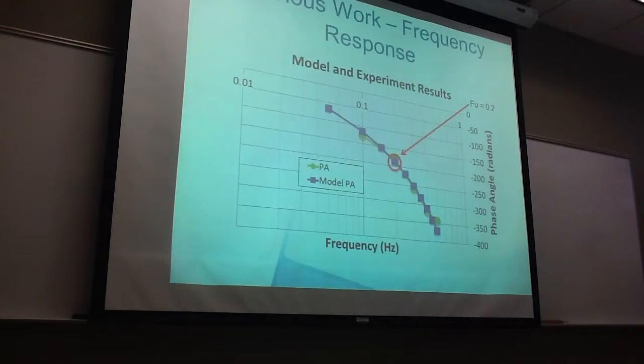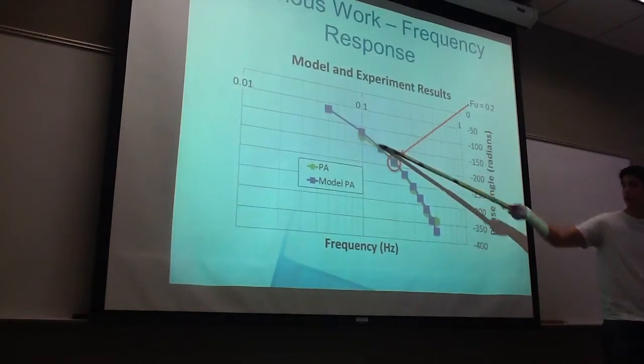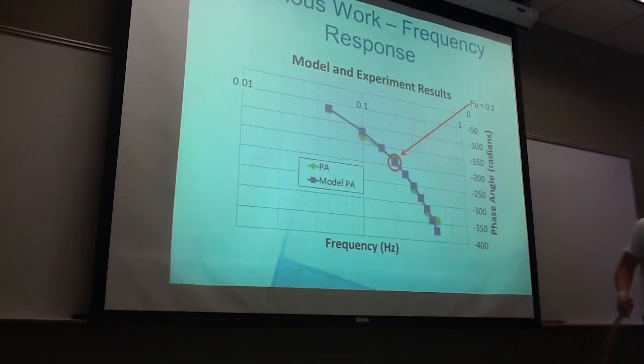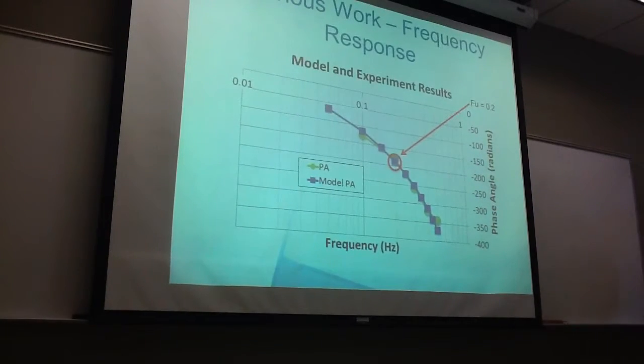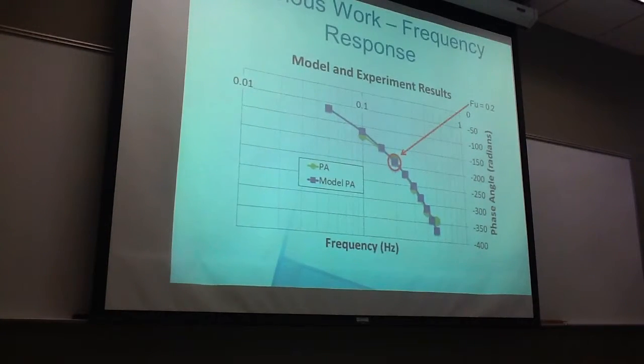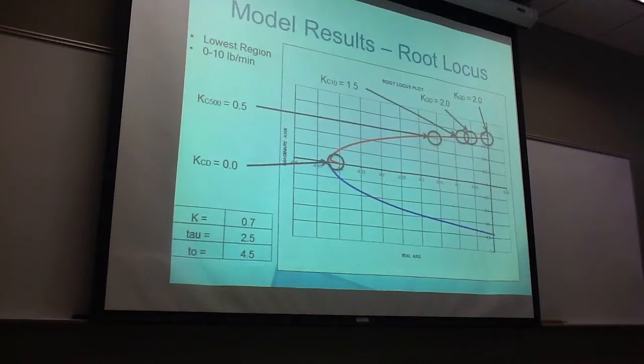And on to our frequency response. This is also another model versus experimental results graph right here. The model results are in the purple, and the experimental is in the green. And our ultimate frequency, we found to be 0.2 cycles per second.